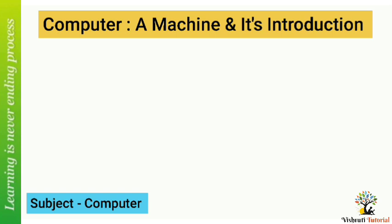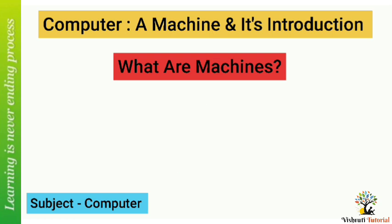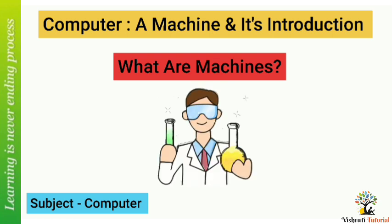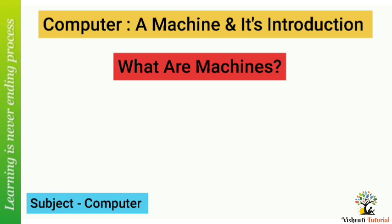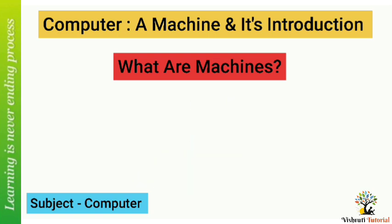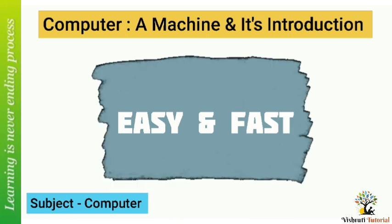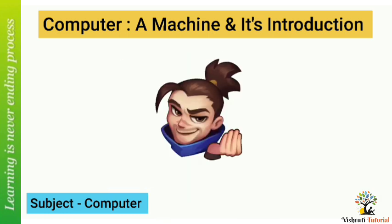Now let's see what are machines. Machines are made by man, so they are called man-made things. Some machines work on electricity and some machines work with manpower. Machines make our work easy and fast.